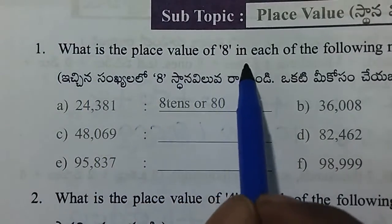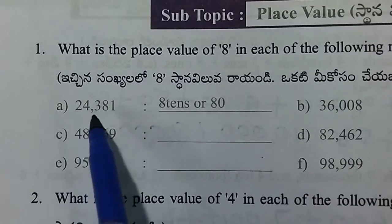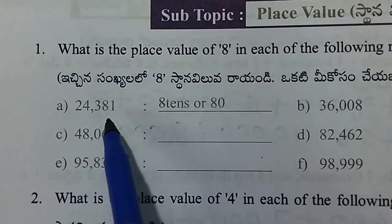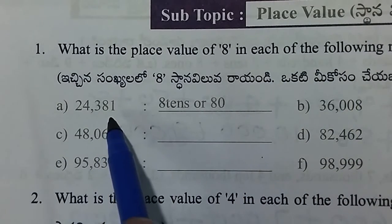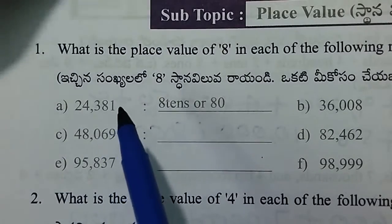What is the place value of 8 in each of the following numbers? In the numbers, 8 is in the 1s, 10s, 100s, 1000s position.